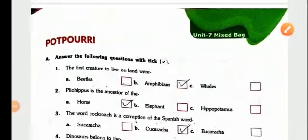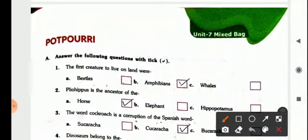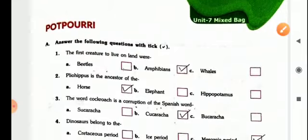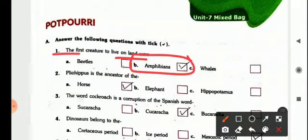Hello students, welcome back to your part 2 video of your GK subject. It is our unit 7 part 2 video. Unit 7 is of your mixed bag, so let's start with potpourri. You have to put a tick mark on the right option after reading the statement. So the first one is, first creature to live on land where amphibians, beetles or whales, so the answer is amphibians.